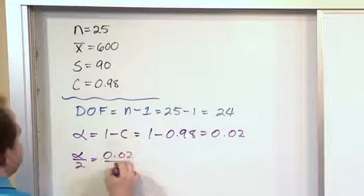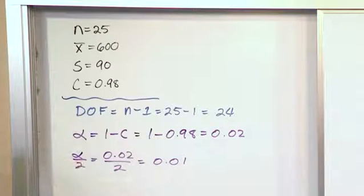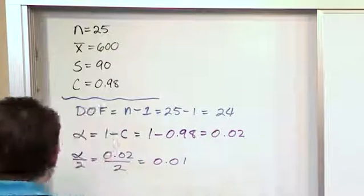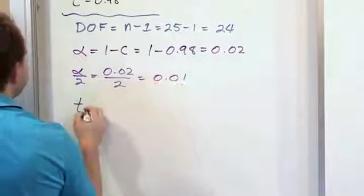which is 0.02 divided by 2, which is 0.01. So this is the value of alpha over 2 that we really care about. So what we really want to look up is the value of t that corresponds to this little bitty area.